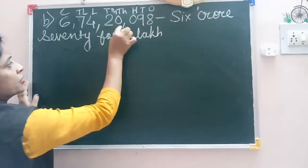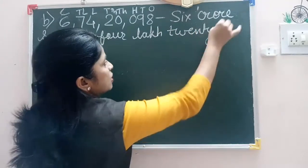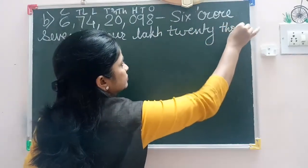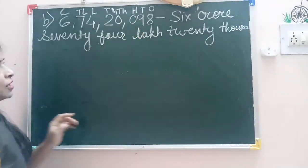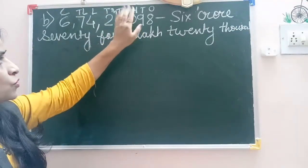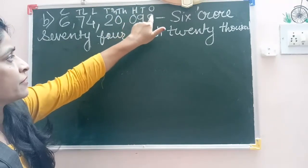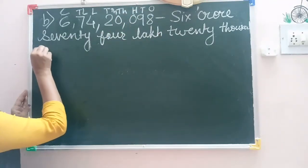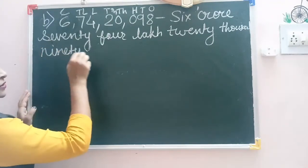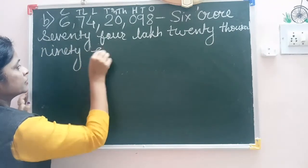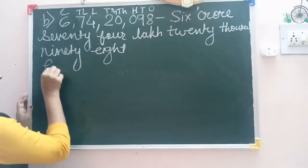20,000. Now, the 100 place is having 0, so we don't have to read the 100 place. The 10s and 1s together: 90, 8. Now the expanded form of it.